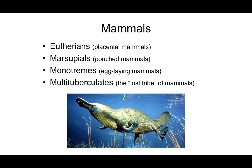The monotremes are egg-laying mammals. There are two: the platypus in Australia and the echidna in New Guinea. These animals are warm-blooded and they produce milk, but like a bird, they lay eggs. And they have a cloaca — a single opening for urination, defecation, and reproduction.